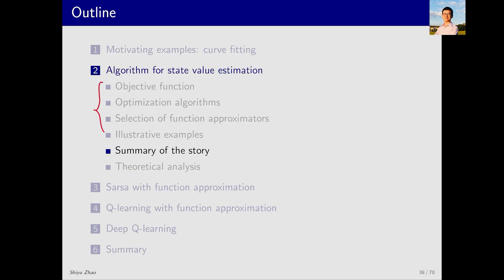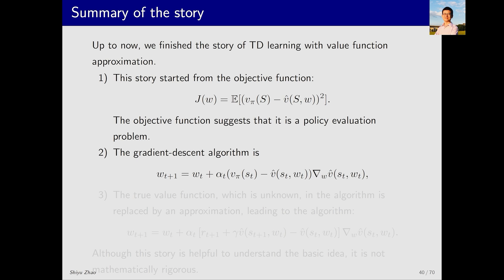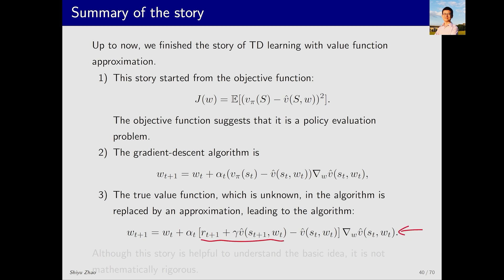Now, let's summarize the contents we just learned. So far, we've learned the idea of value function methods. Let's review it again. First, we start with an objective function, which looks like this, it's a weighted average of the squared error between the true state value and the estimated state value. Then, we optimize this objective function using the gradient descent algorithm. This is the corresponding gradient descent algorithm. The problem here is that we don't know the value of v pi. So what do we do? We can replace v pi with this term, and the algorithm becomes the one that combines TD learning with value function approximation. This is the storyline of the whole process.